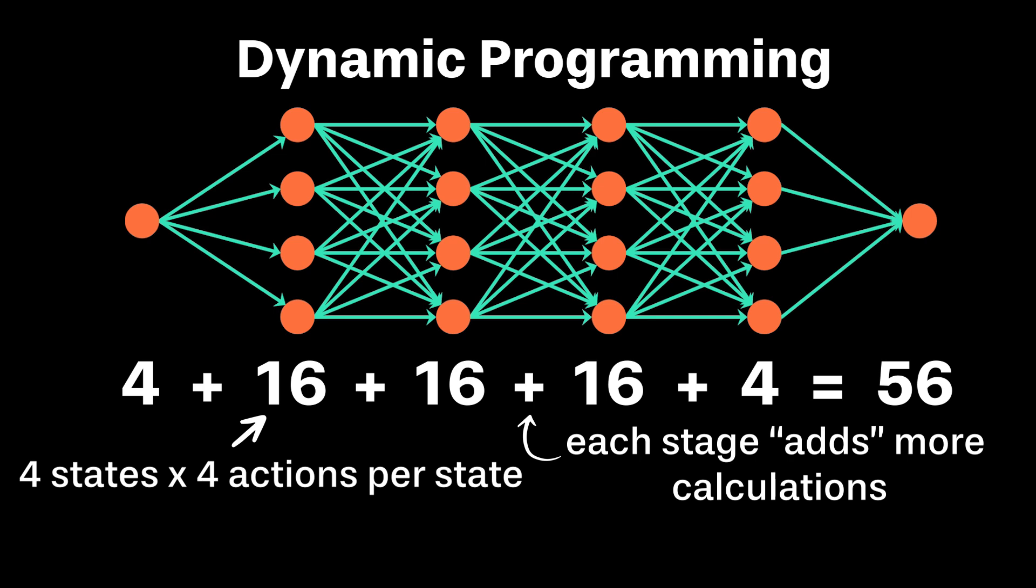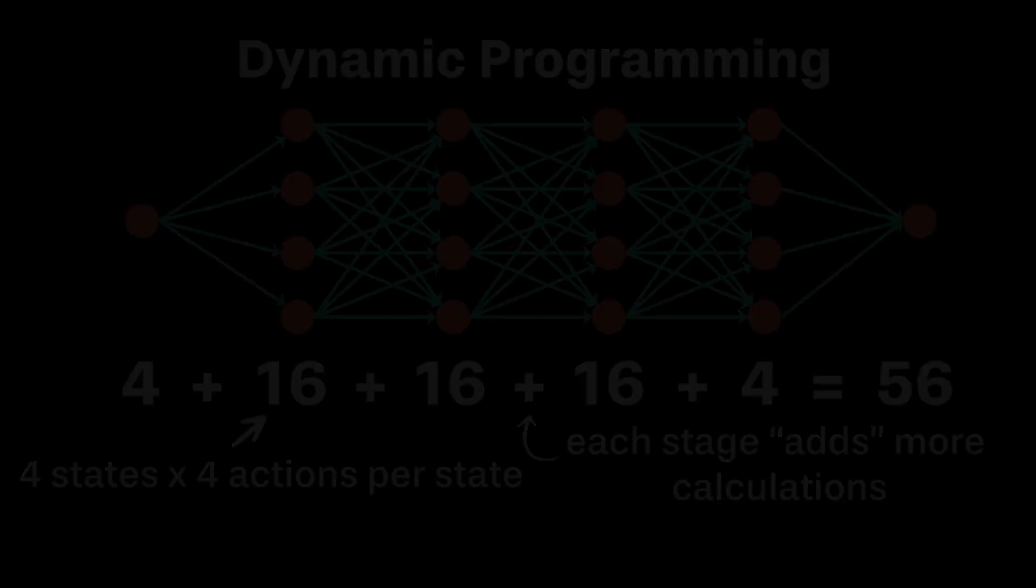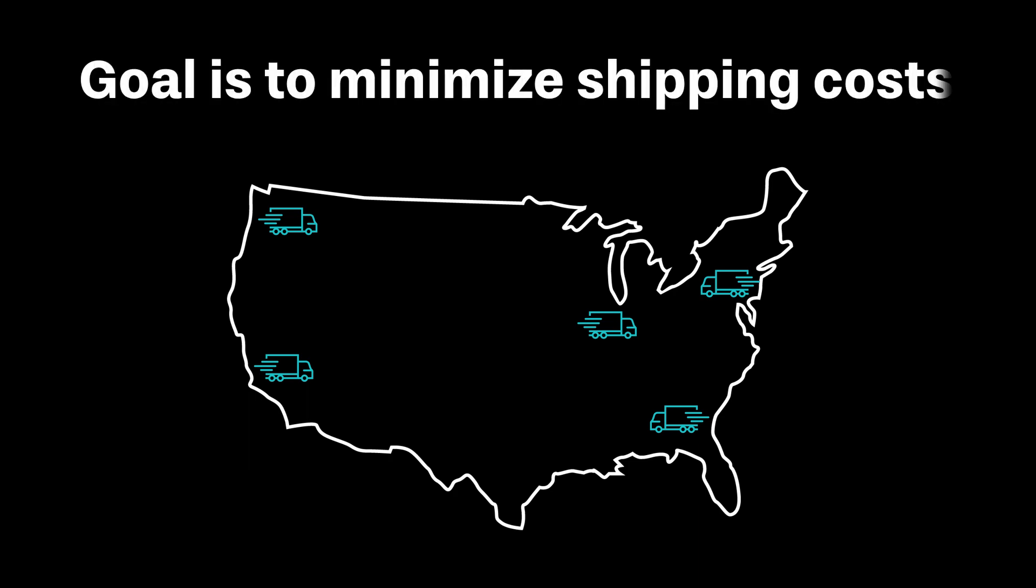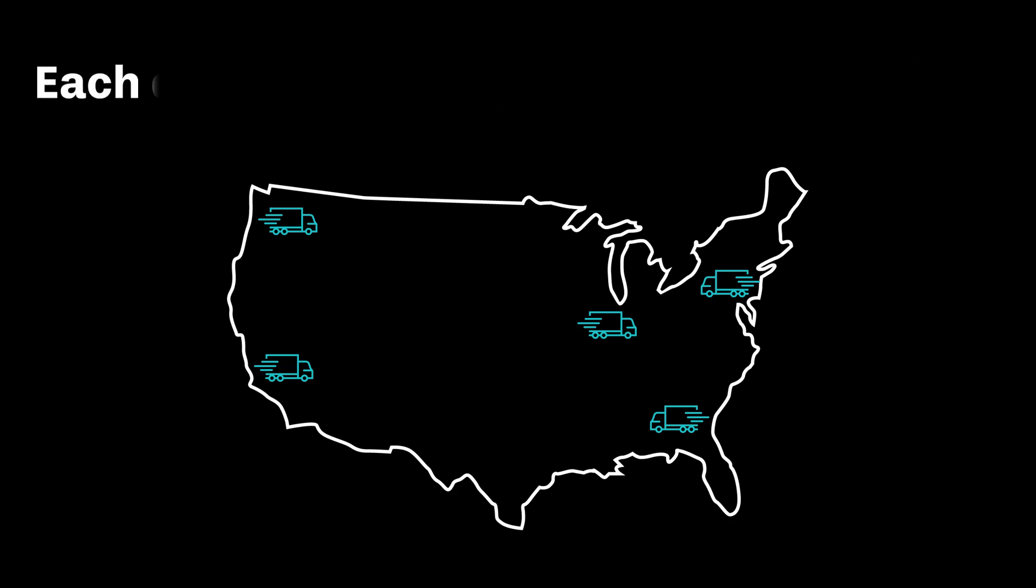Now with an understanding of the core components of dynamic programming, what are some of the challenges around its implementation? Let's consider the problem of running a logistics company. Your goal is to perhaps minimize your shipping costs for your orders received. So based on what I said earlier, you can probably define this quite easily as a dynamic program. You may need to make choices each day, and so each day could represent a stage in your decision-making process.